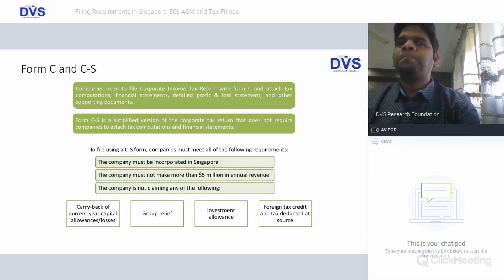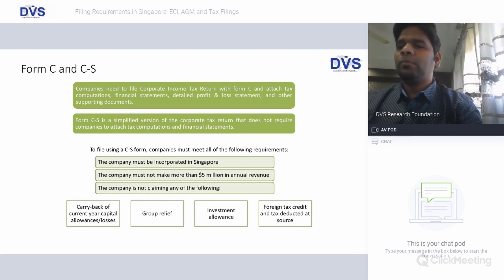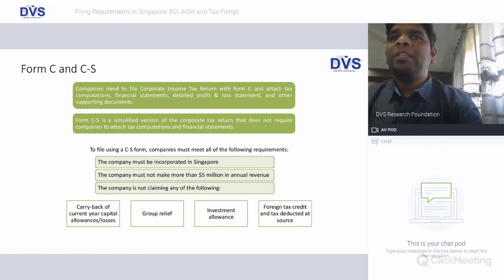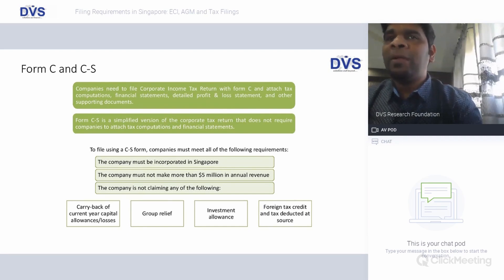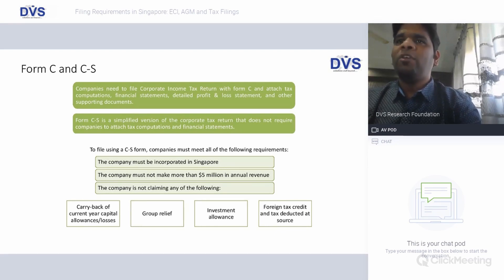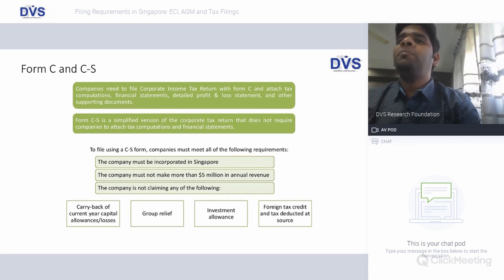For Form C, the company needs to file the corporate income tax return and attach the computation, financial statements, the detailed profit and loss account, and other supporting documents to substantiate that the income declared is true and fair. Form CS is a simplified version of the corporate income tax return that does not require companies to attach computations and financial statements.